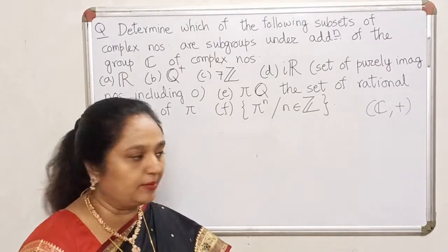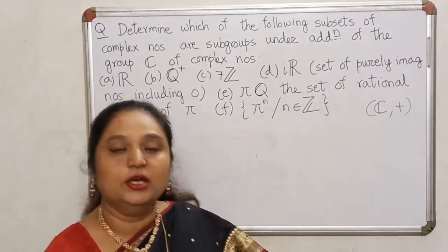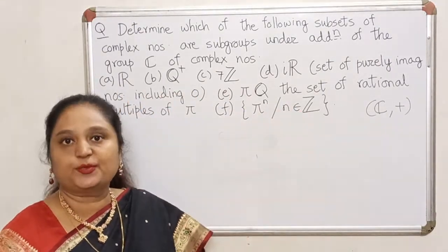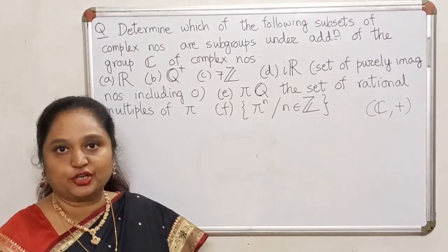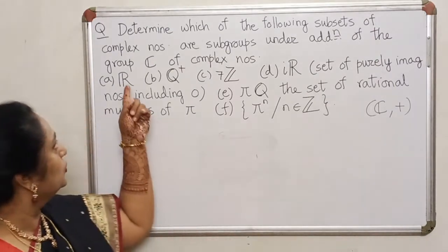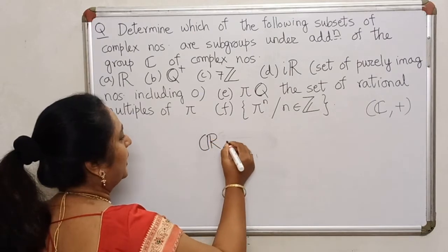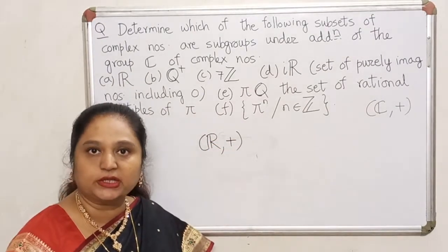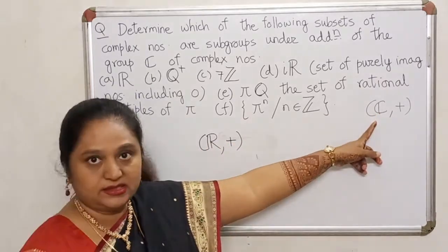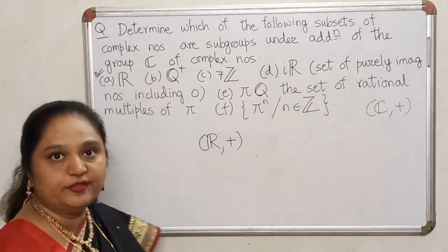If you already know that something is a standard subgroup — remember the operation is addition — you have to check which of these sets, with respect to the induced operation of addition, becomes a group on its own. Look at the set of real numbers. The set of real numbers is for sure a group with respect to addition, and the set of real numbers lies inside C. So this one is definitely a subgroup of C.